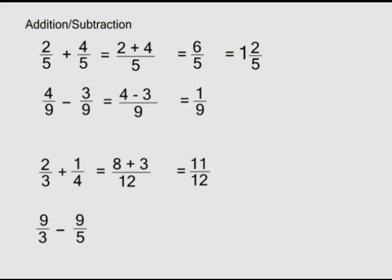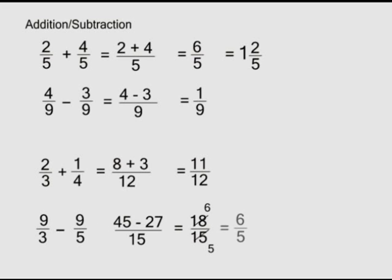Nine over three minus nine over five: the LCM of three and five is fifteen. Fifteen divided by three is five; times nine is forty-five. Fifteen divided by five is three; times minus nine is minus twenty-seven. Forty-five minus twenty-seven is eighteen over fifteen. We can cancel by three to get six over five, which as a mixed fraction is one and one over five.